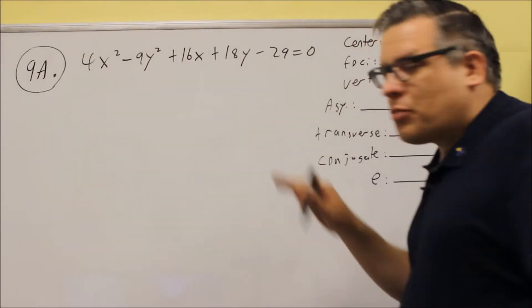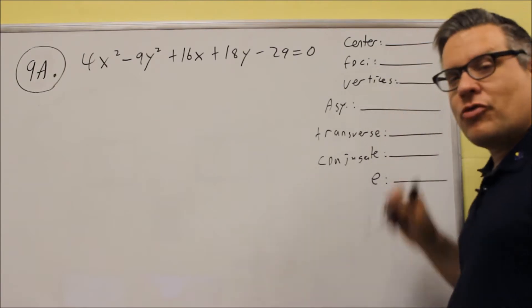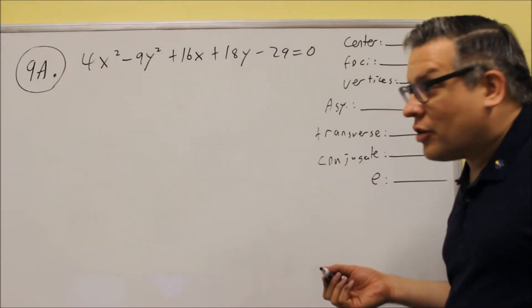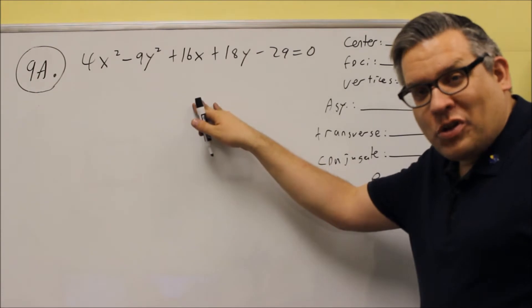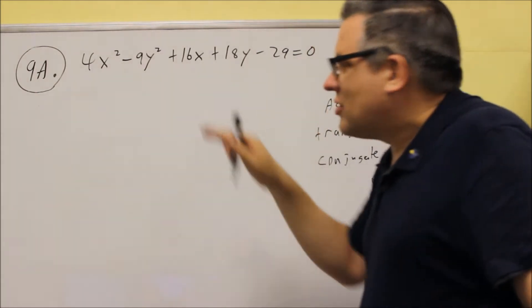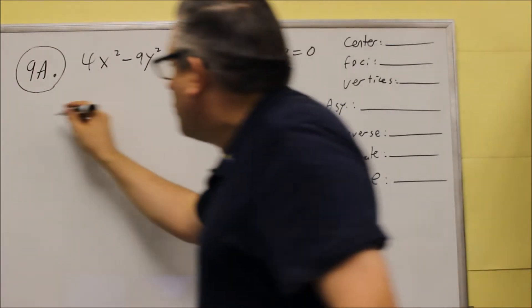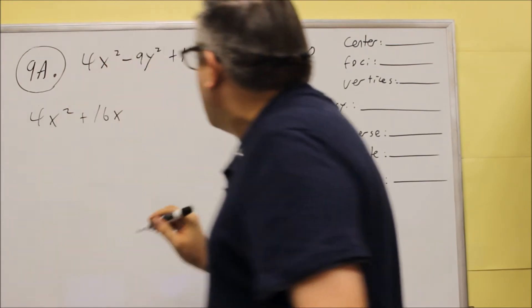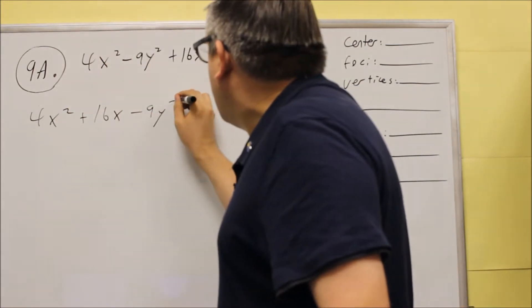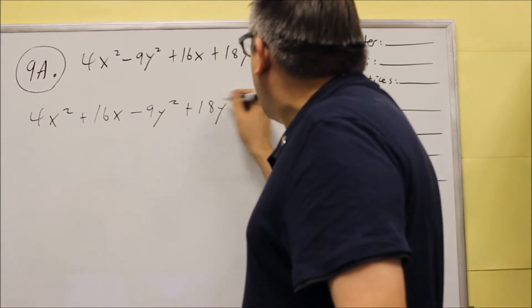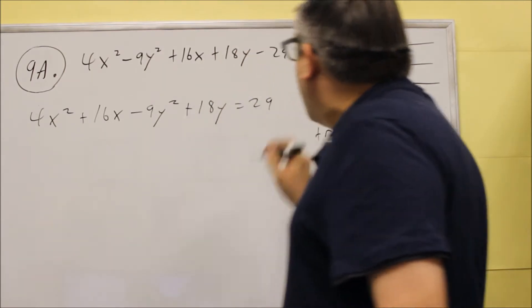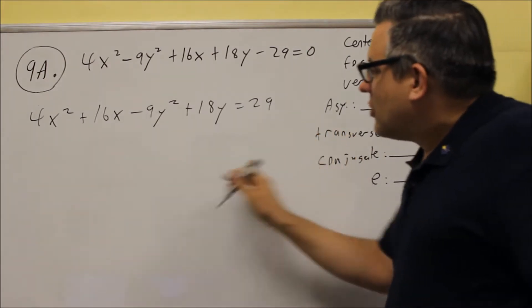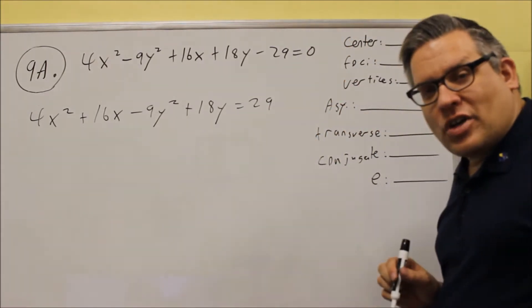We need to first put this into the proper form, so that way we can get some information here and draw the graph. So like we did before with the ellipses, what you're going to do is put the x's and the y's together first. So we're going to do 4x² plus 16x goes first. Then we have -9y² plus 18y.